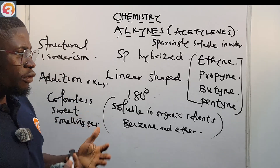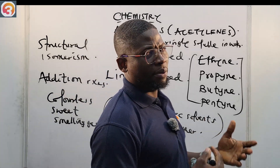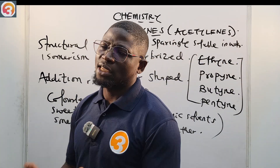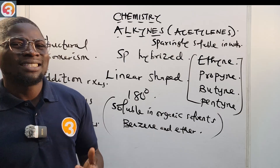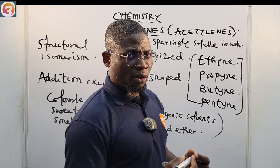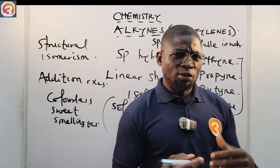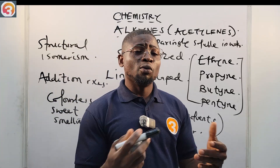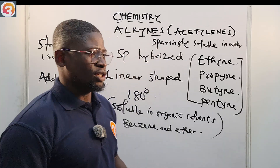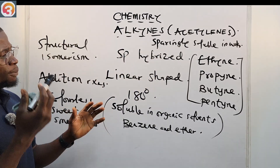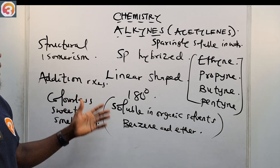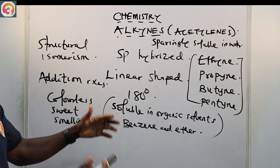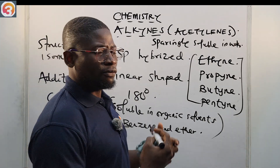As we continue looking further into alkynes, we are going to look at the preparations of alkynes, then the reactions that alkynes undergo, and then tests for triple bonds — including ammoniacal silver nitrate, copper(I) chloride, and bromine water. Make sure you commit all of this to memory because questions come out from them.